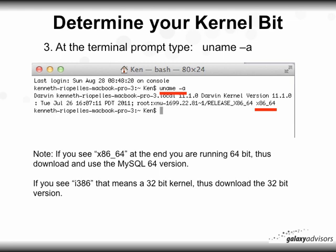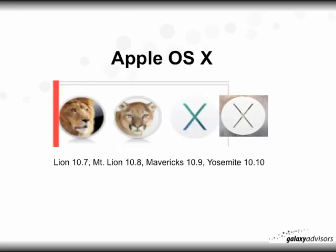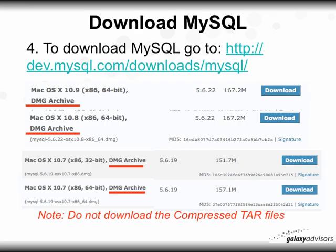32-bit kernels are pretty much older Macs — all the newer Macs are 64-bit. Generally, Lion is one of the last ones that will have a 32-bit kernel. So if you're running something more recent, most likely you're going to see x64 at the end of that kernel output.